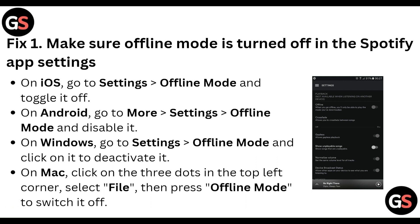On Windows, go to Settings, then Offline Mode, and click to deactivate it. On Mac, click the three dots in the top left corner, select File, then press Offline Mode to switch it off.